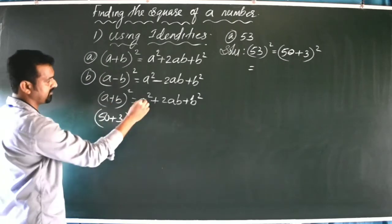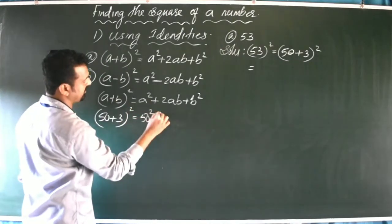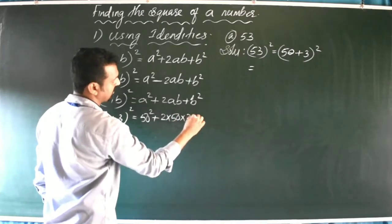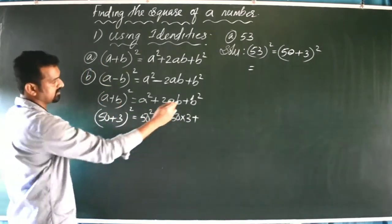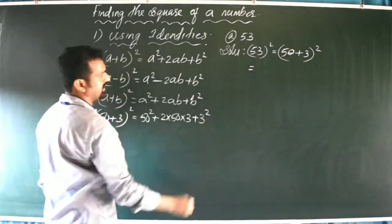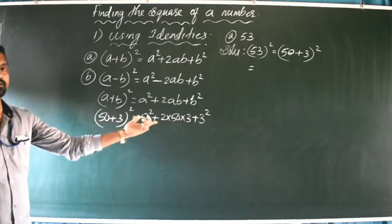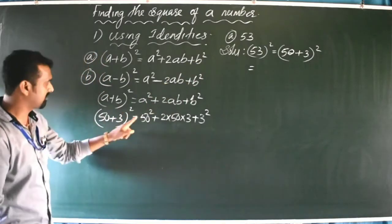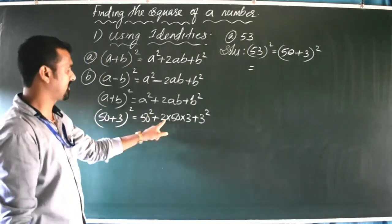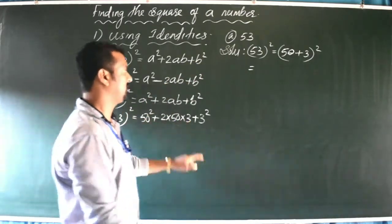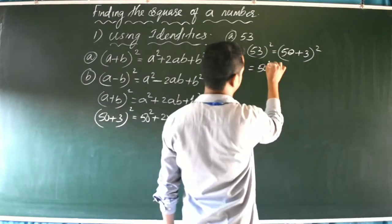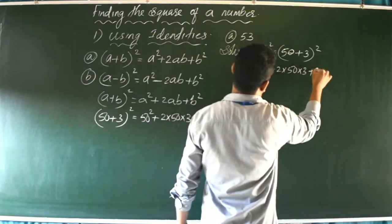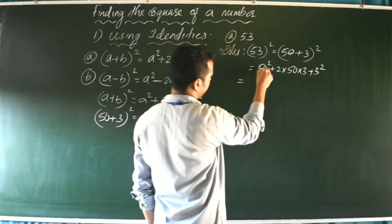Since a = 50 and b = 3, applying the identity: (50 + 3)² = 50² + 2 × 50 × 3 + 3². That gives us 50² = 2500, plus 2 × 50 × 3 = 300, plus 3² = 9.